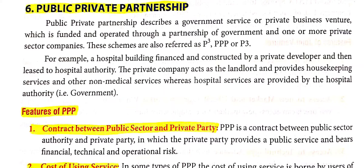For example: a hospital building financed and constructed by a private developer — the private developer invests all the money — and later leases it to the hospital authority (i.e., the government). The private company acts as a landlord, providing housekeeping and non-medical services, while the government pays a fixed rent.